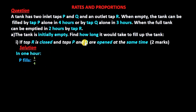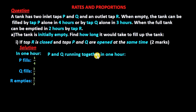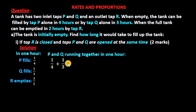Arguing in the same way with tap Q, we find that Q fills a third of the tank in one hour. We can also determine the fraction that tap R empties in one hour, which is one over two. But we are only interested in P and Q for this question. If P and Q run together, the fraction of the tank they fill in one hour is obtained by adding a quarter and a third, giving us 7 over 12.